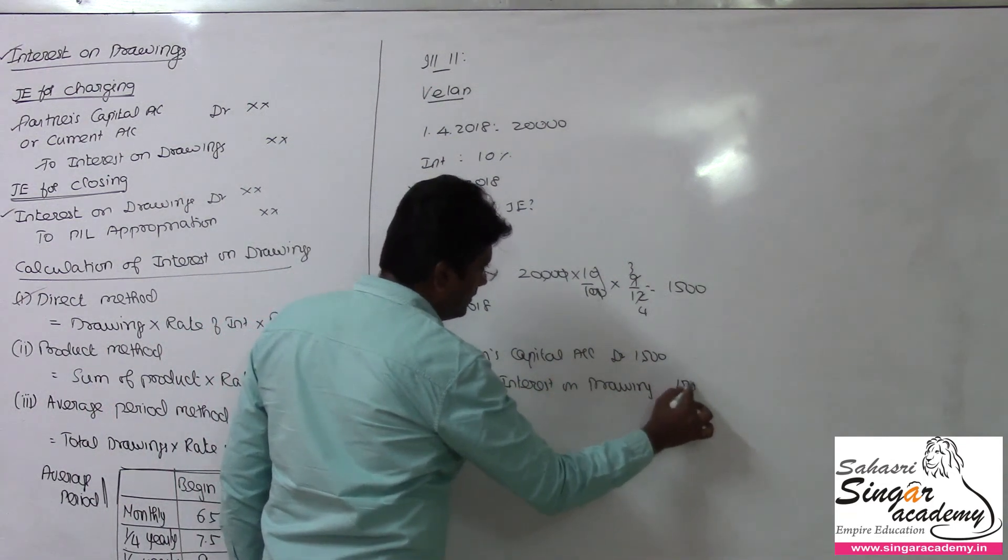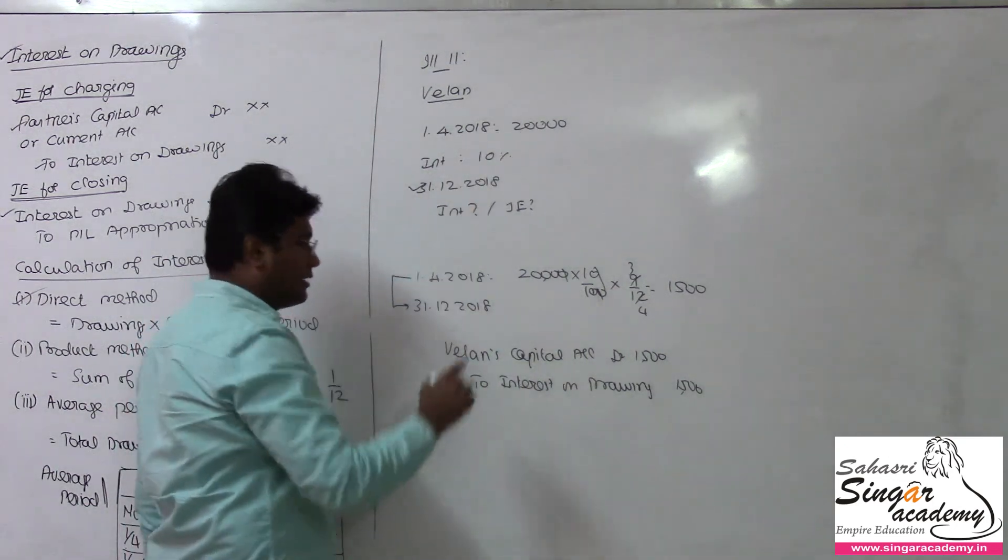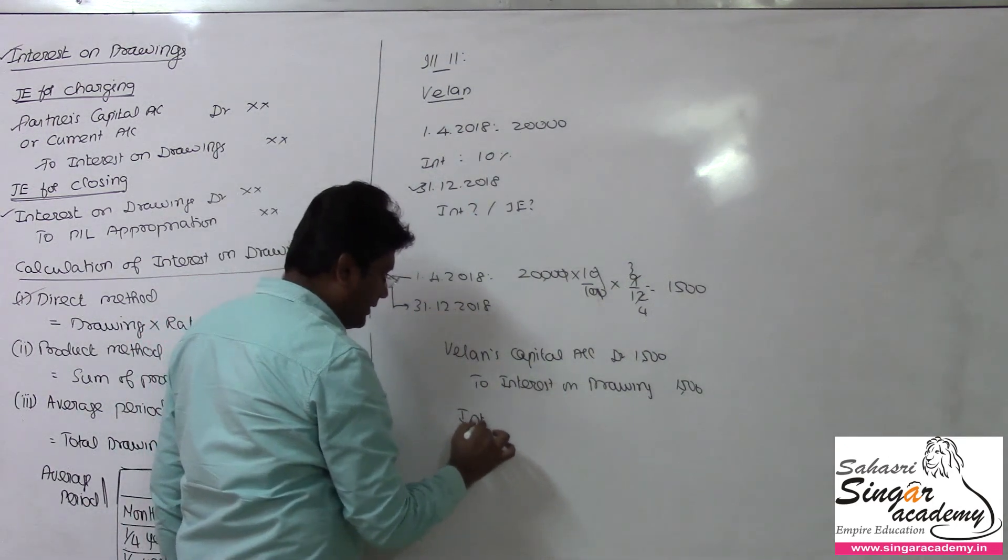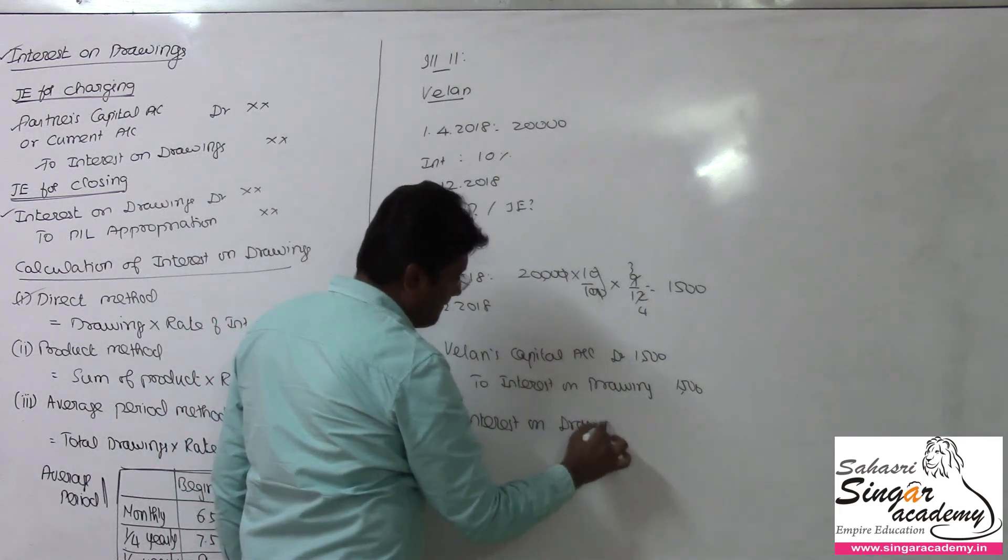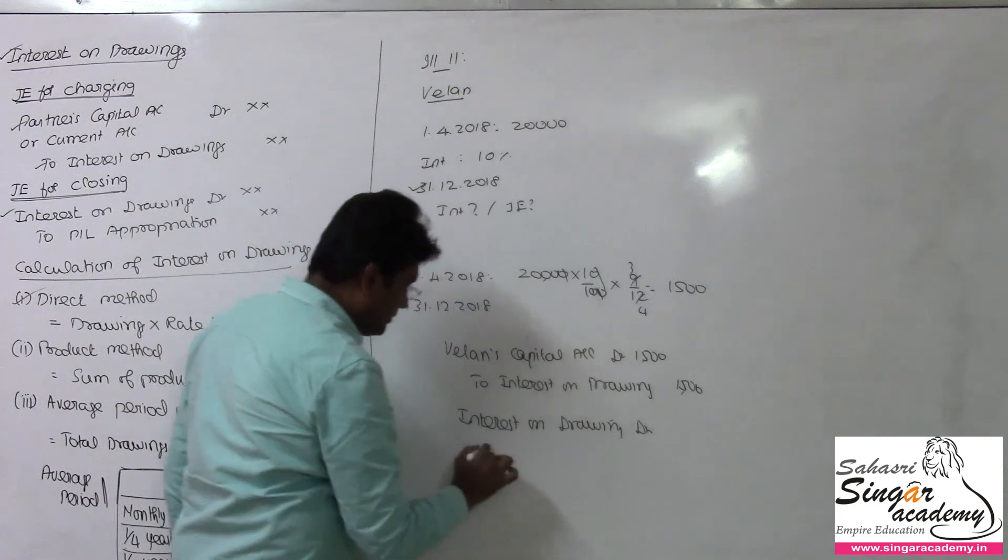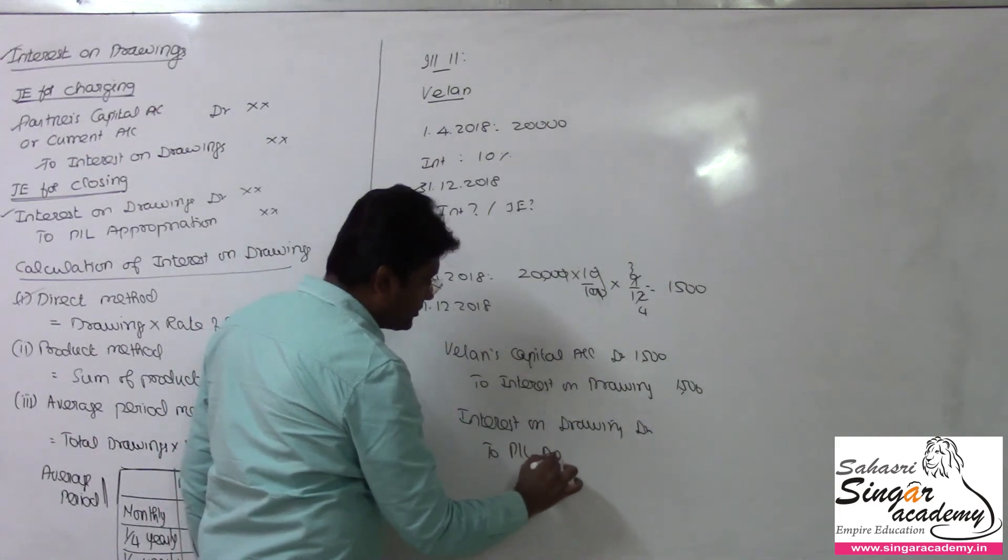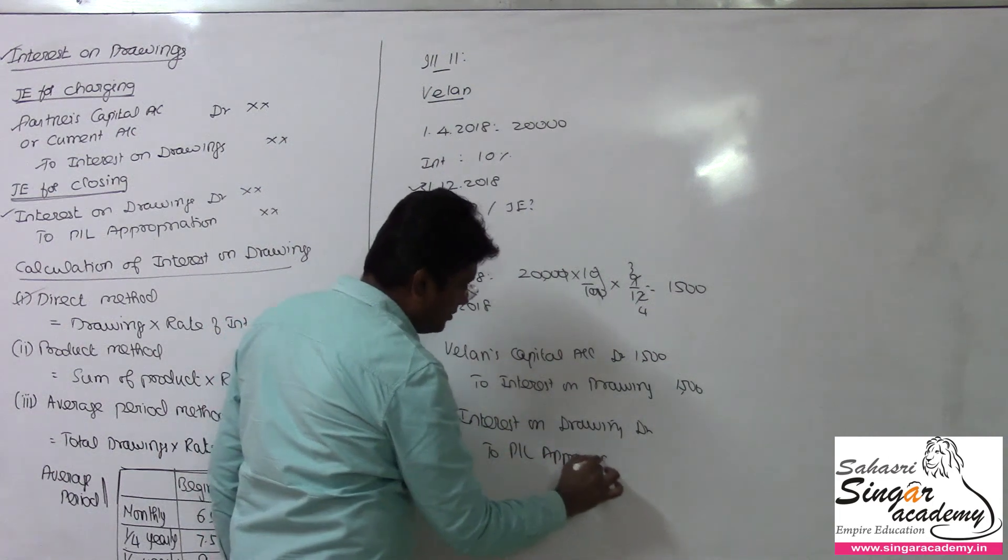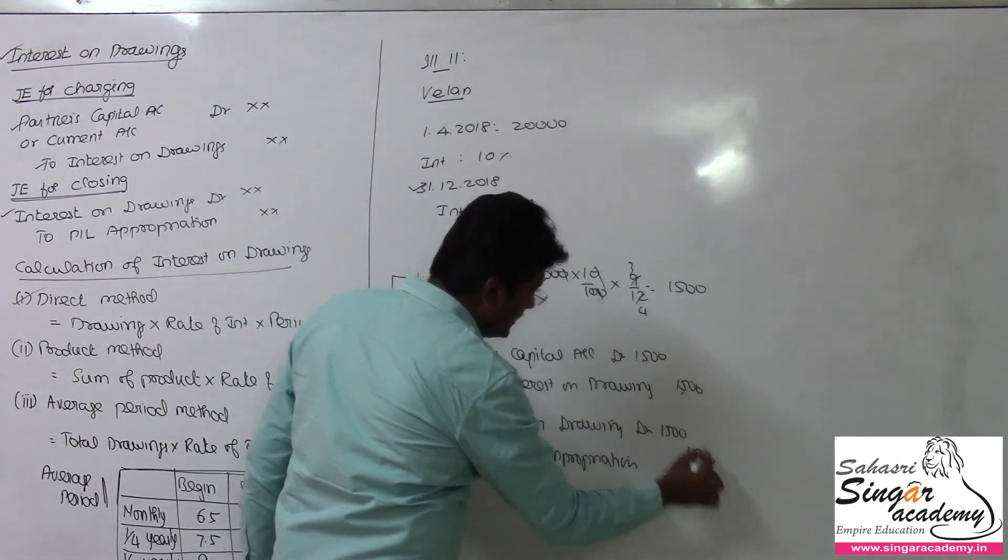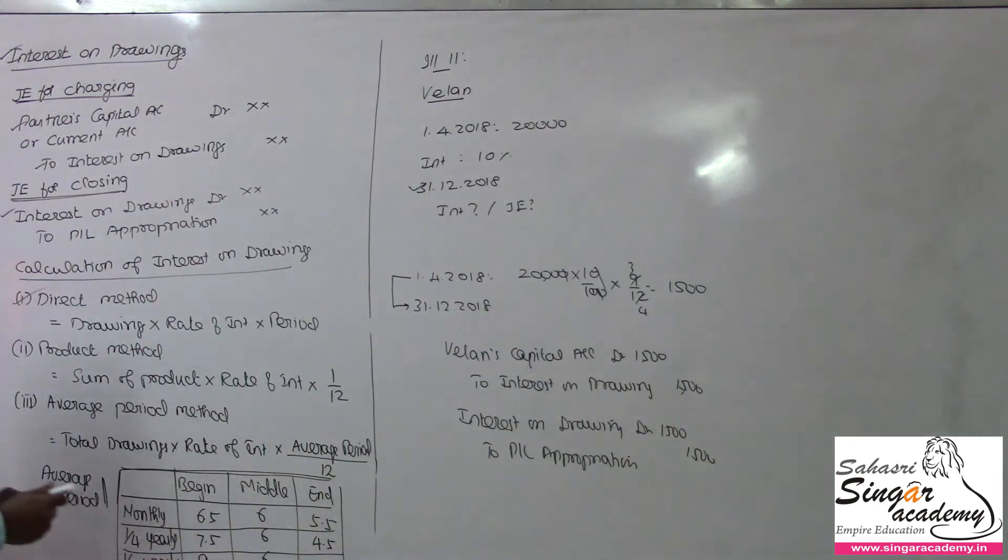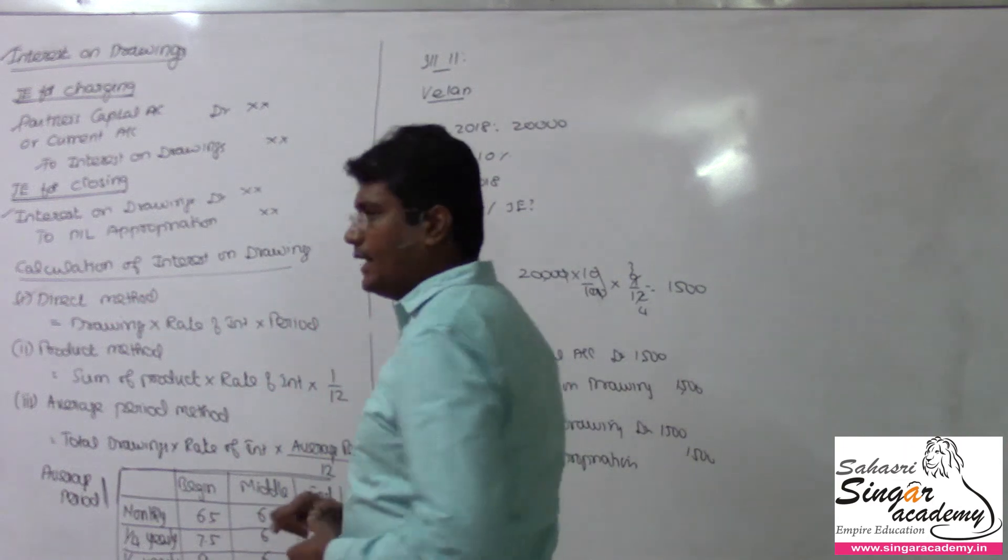This interest will be transferred to the P&L appropriation account. So interest on drawings for Velen to P&L appropriation account, Rs. 1500. This is how the entry is passed for illustration number 11, which is the direct method.